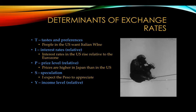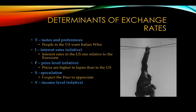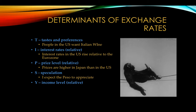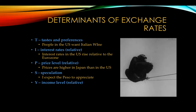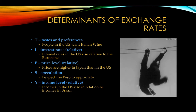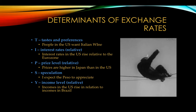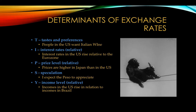Speculation: if I think the peso is going to appreciate, I'm going to want to buy as many pesos as I can — I demand the peso. If I think the euro is going to appreciate, I demand that currency. Speculation is probably the one we'll talk about least. And then relative income levels — Y is our abbreviation for GDP. As GDP increases, incomes increase. If incomes in the United States rise relative to Brazil, we're going to buy more products from Brazil, demand Brazilian currency, and supply our currency.